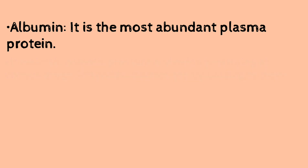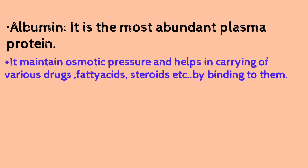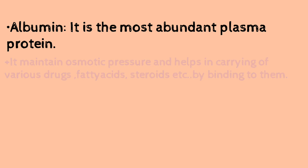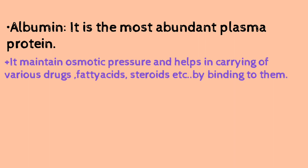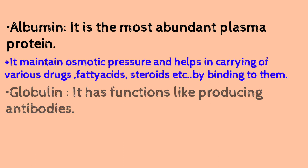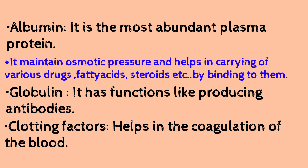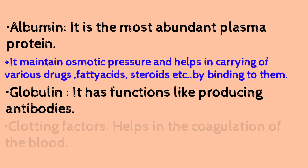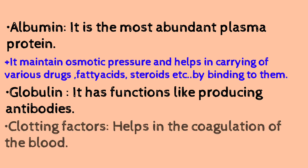Albumin acts as a carrier protein for drugs, fatty acids, and steroids. Globulin is also a plasma protein and is helpful for immunity purposes. Clotting factors are nothing but coagulation factors. If you have any injury or unwanted infection, these coagulation or clotting factors are also present in plasma.